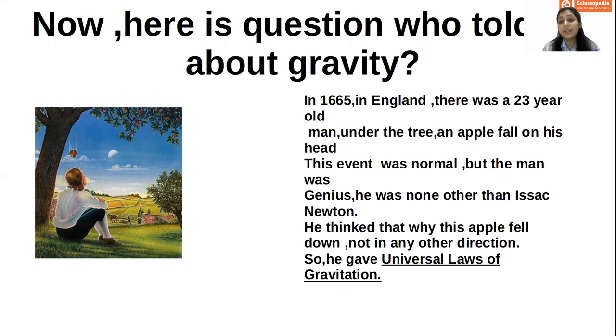In 1665 in England, there was a 23 year old man. He was sitting under a tree and apples fall on his head. This event was normal, but this man was genius. He was none other than Isaac Newton. He thought that why this apple fell down, not in any other direction. So over here, he gave us the universal law of gravitation. He told that force exerted on us is continuously.